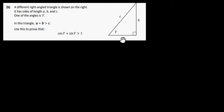Now, in this triangle, A plus B is bigger than C. Well, that has to be the case in all triangles. If A plus B was less than C, it wouldn't actually form a triangle. So A plus B is bigger than C. Use this to prove that cos Y plus sine Y is greater than 1.